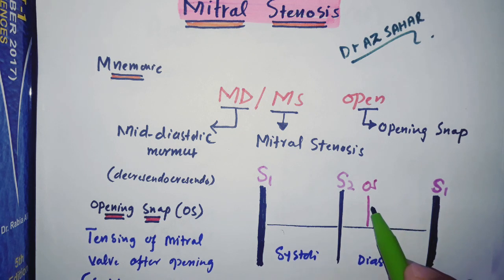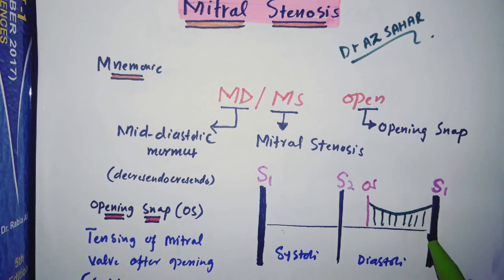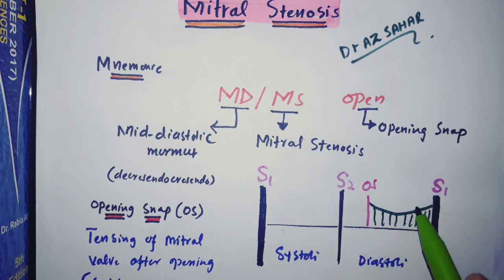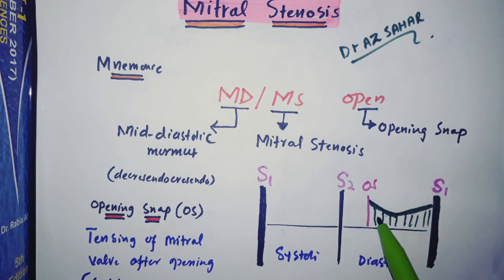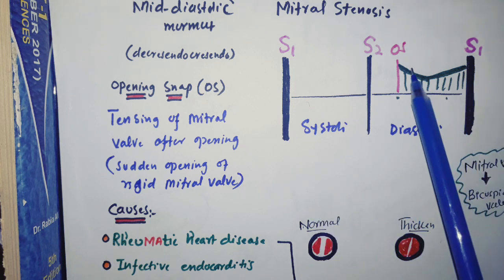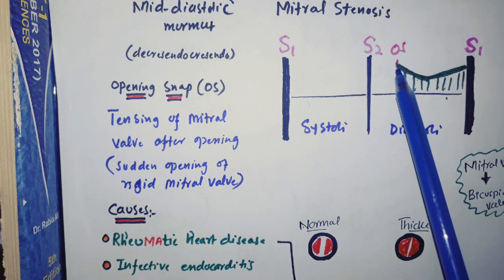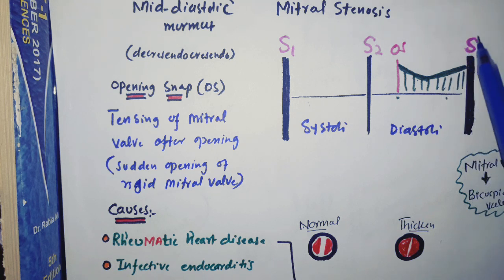The murmur first goes downward and then upward — this is the mid-diastolic murmur. If you want to remember it: first we go down, which is called decrescendo, and then we go up, which is called crescendo. So this murmur is also called a decrescendo-crescendo murmur, and it is in the middle of diastole, which is why it is called mid-diastolic. I drew S1 darker, meaning there is a loud S1. The murmur was first high in intensity, went down, then moved upward — intensity increases at S1.